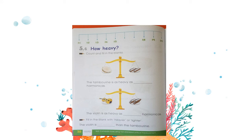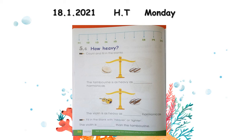Everyone open page number 38 in your mass workbook C3. Before doing this page, write today's date: 18.1.2021, space, H.T., space. The day is Monday — M should be capital. Write the date at the top of the page, touching the line, and make sure you are writing in a proper format. Then come to the number line and find out which numbers are missing.